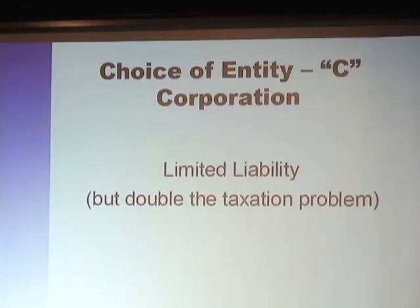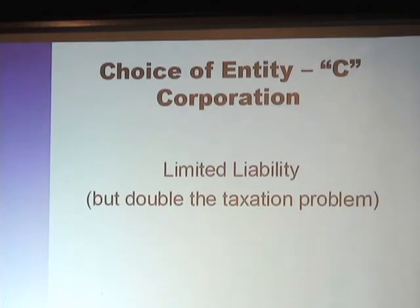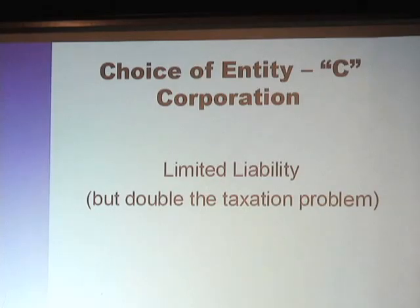When you set up the corporation, you want to walk like a corporation and talk like a corporation. You want to have your appointments, your annual minutes, do your filings with the state — like in Virginia, the State Corporation Commission, your annual reports. You want to open a bank account in the name of the corporation and get an EIN number, an employer identification number from the IRS, to make sure you follow corporate formalities so you don't have the piercing the corporate veil problem.